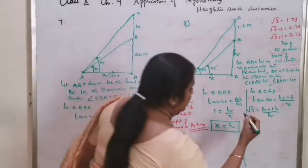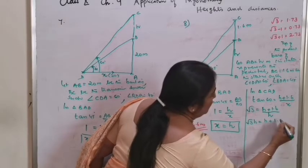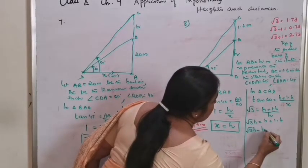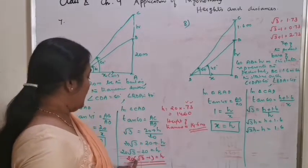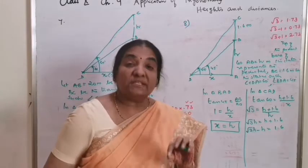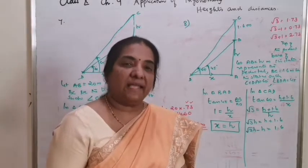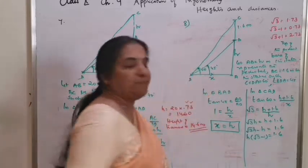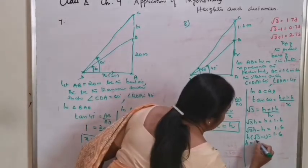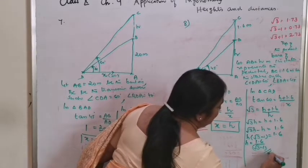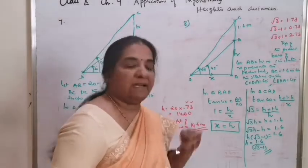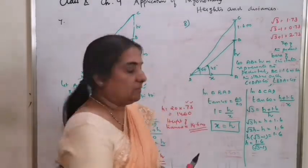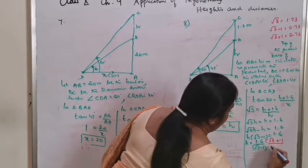Cross multiply: root 3 H equals H plus 1.6. Transpose H to the left side: root 3 H minus H equals 1.6. Taking the common factor H outside: H into (root 3 minus 1) equals 1.6. Therefore H equals 1.6 divided by (root 3 minus 1). You cannot leave an answer like this — you have to rationalize. Multiply and divide by (root 3 plus 1) by (root 3 plus 1).